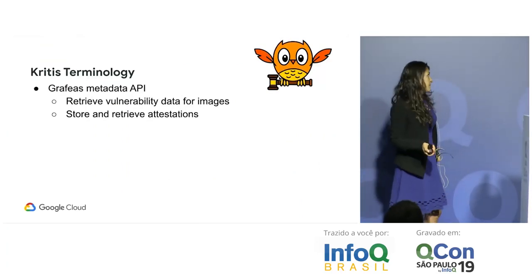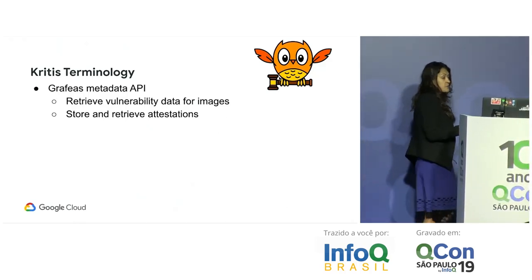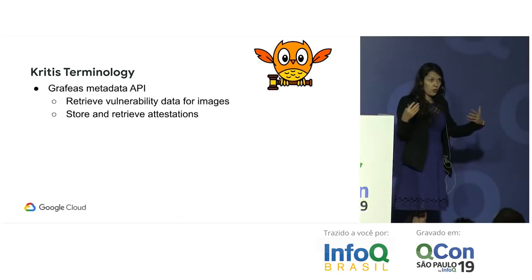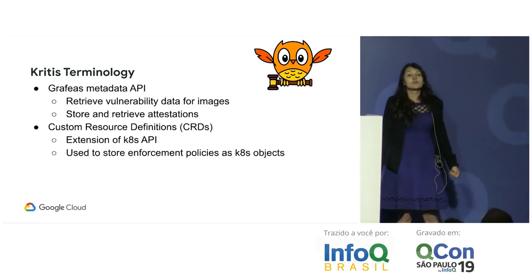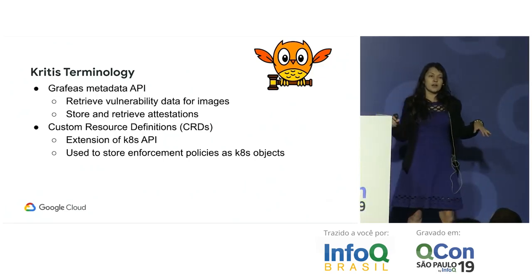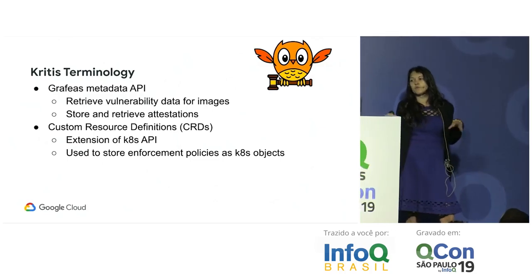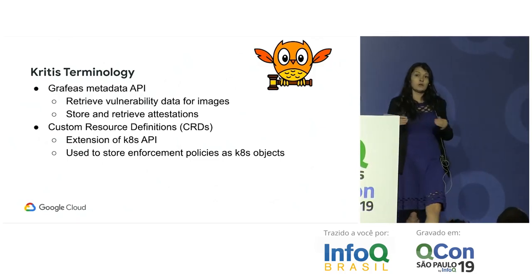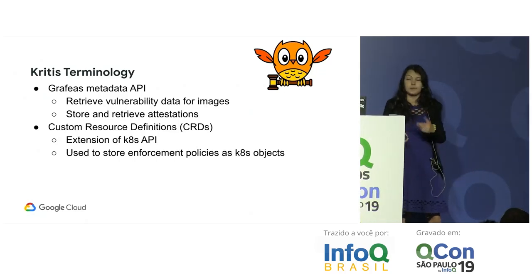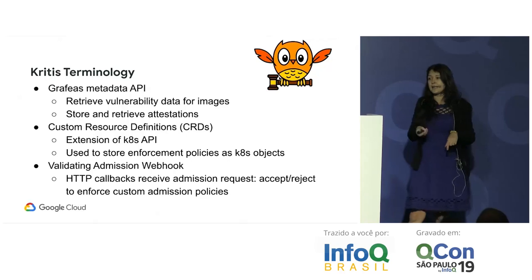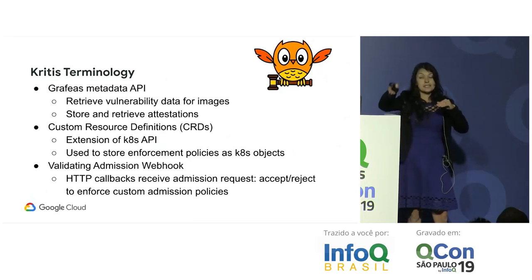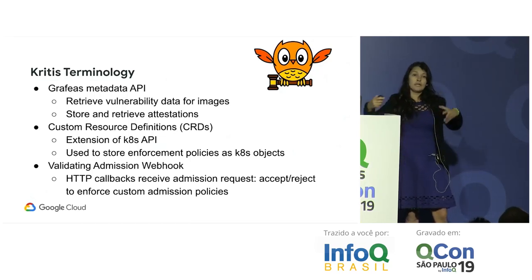A bit of Kritis terminology: it uses the Grafeas metadata API to store and retrieve vulnerability information and attestations for already-admitted images. It also uses Custom Resource Definitions — CRDs — which are extensions of the Kubernetes API used to store enforcement policies as Kubernetes objects. Kritis also uses a validating admission webhook: HTTP callbacks that receive admission requests and decide whether to accept or reject them while enforcing custom admission policies.